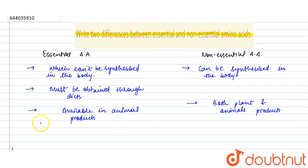For example, 9 out of 20 amino acids are essential amino acids, whereas remaining 11 amino acids are non-essential.